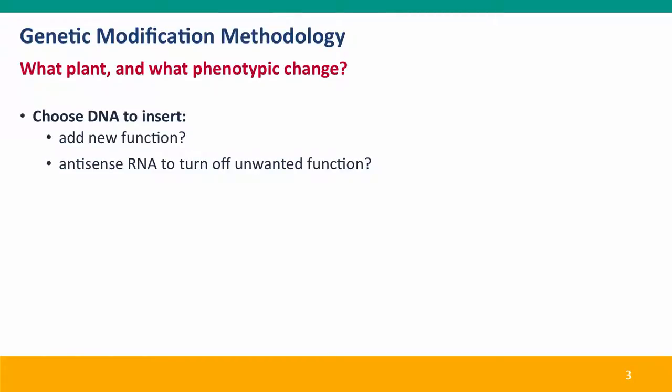The steps in producing a plant by genetic modification — by controlled in vitro engineering — are very different from those in a conventional plant breeding program. You start by deciding what species you want to change and what phenotype you want to change. But then the next step is to decide what DNA you're going to insert in this plant to bring about your phenotypic change.